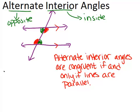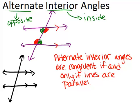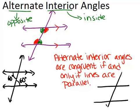Let's look at an example of each case. The first situation: if we have two parallel lines and a transversal, then alternate interior angles are congruent. So if I knew that this angle was 60 degrees, that means this angle also has to be 60 degrees.